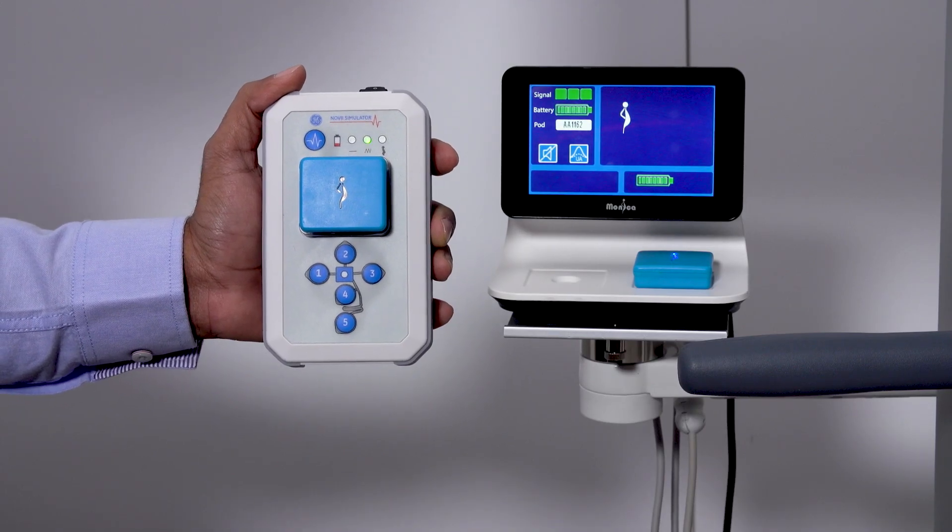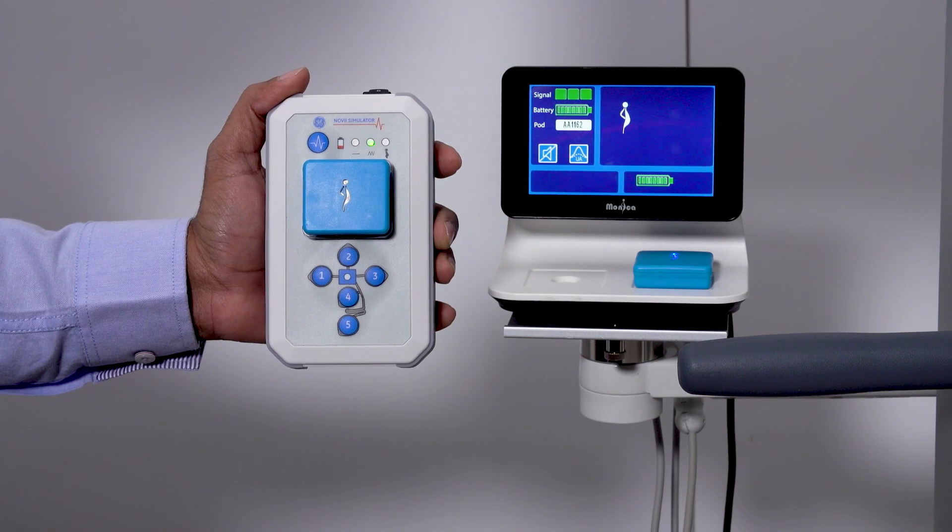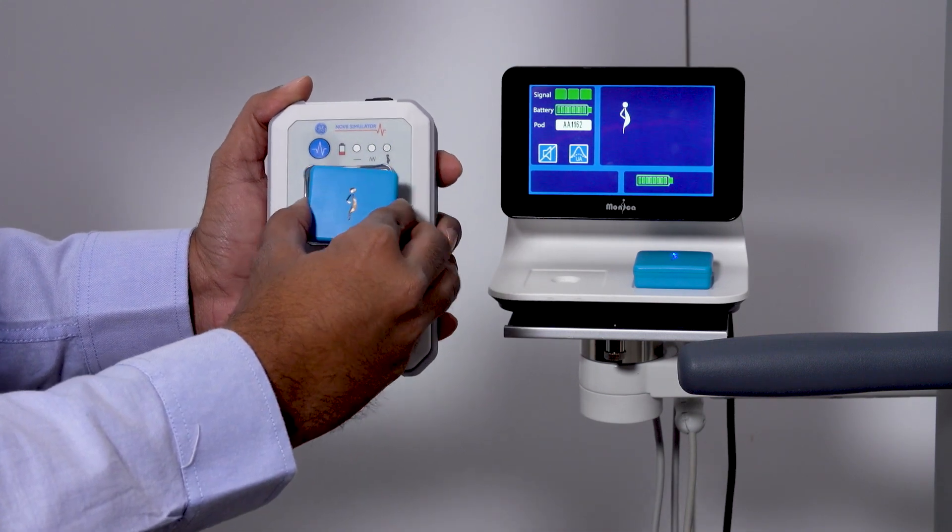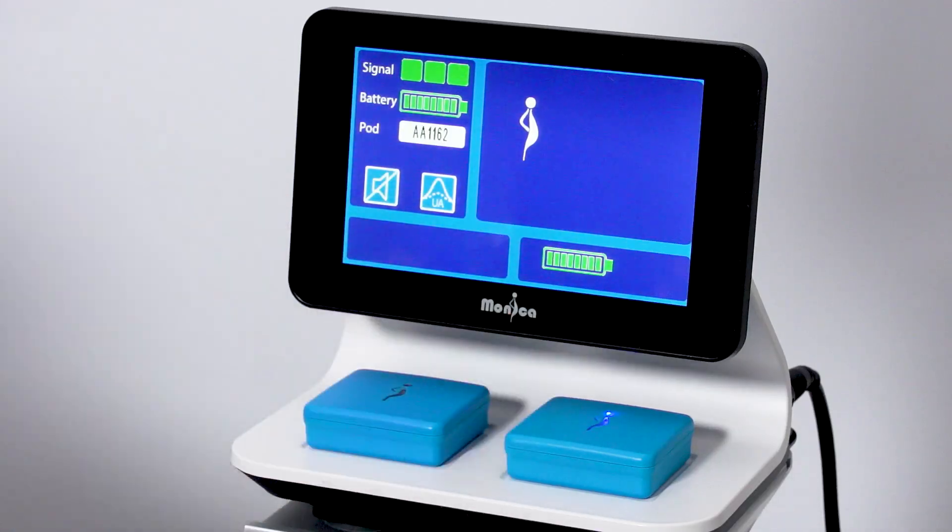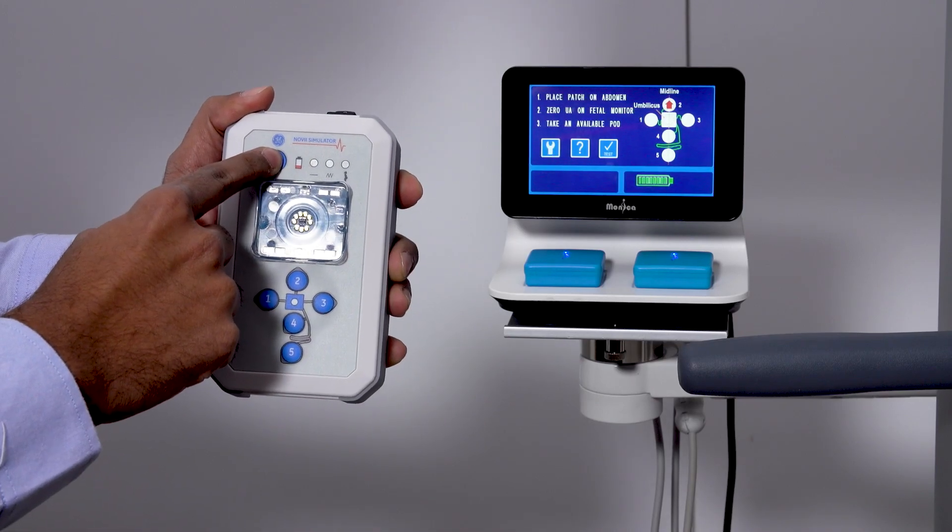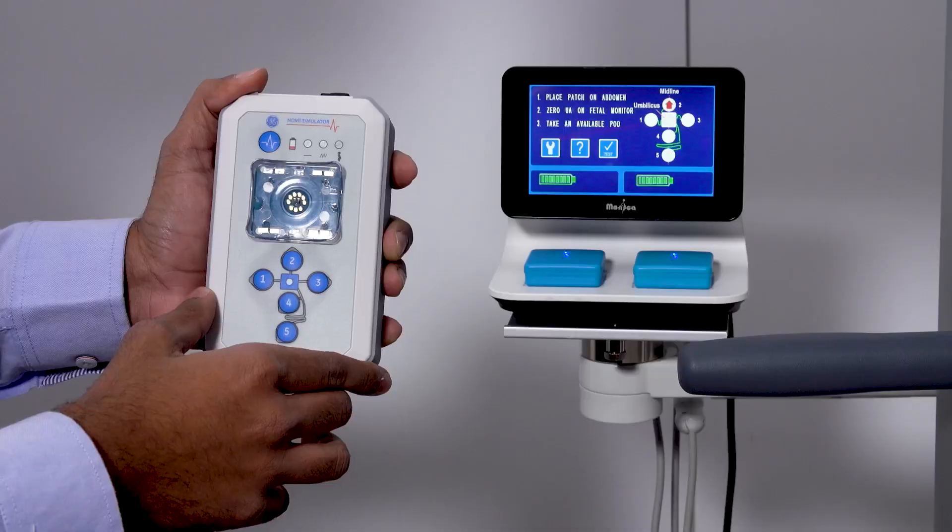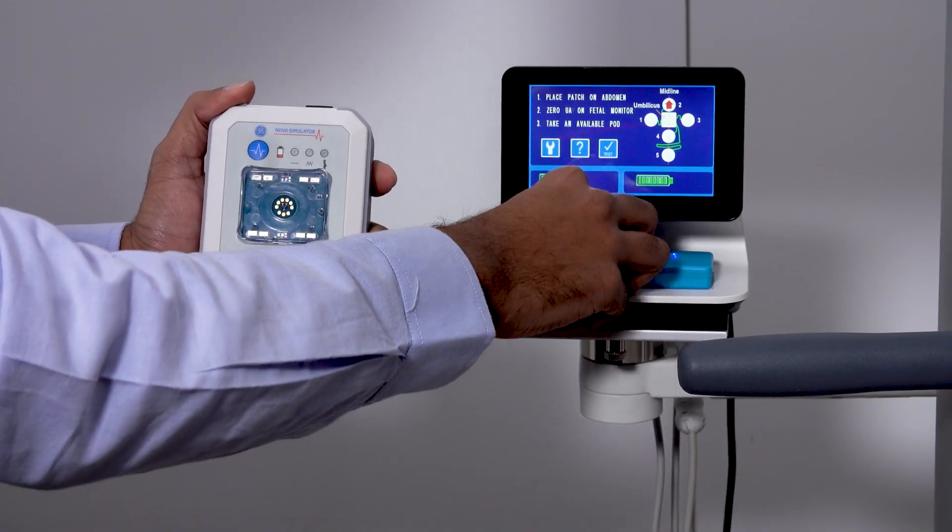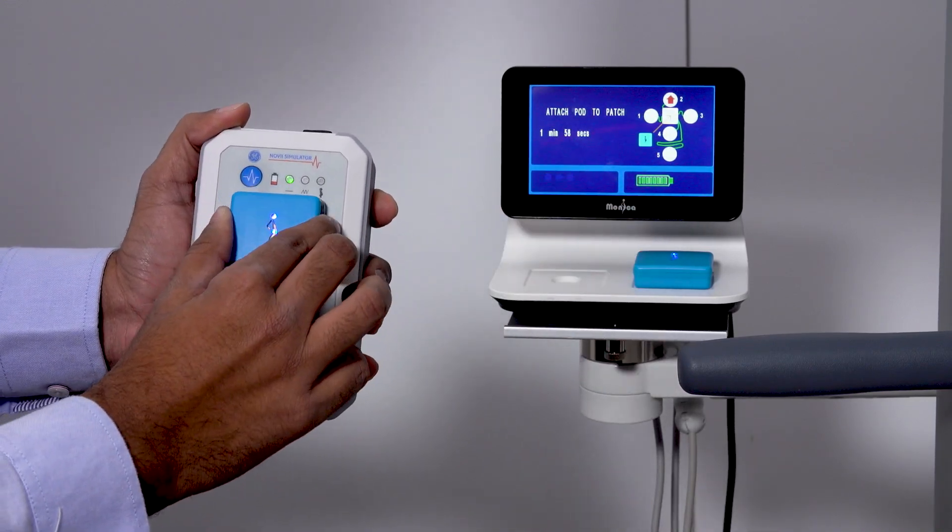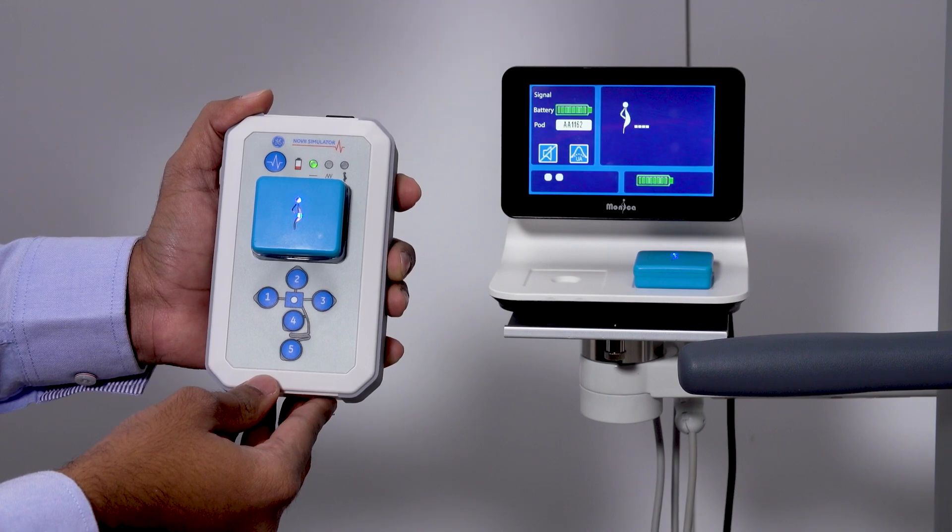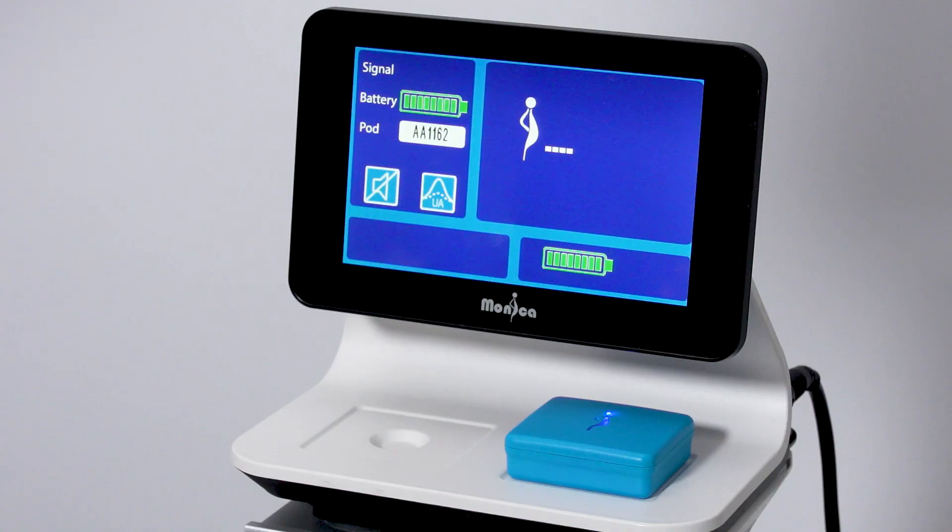To change mode to constant and restart the monitoring session, remove the pod from the simulator and put it back on the interface charging bay. Then change the mode. And once the battery indicator appears on the Novi screen, put the pod back in the simulator pod clip to start a new simulation. Once the fetal heart rate quality indicator turns green, the device is now in constant mode.